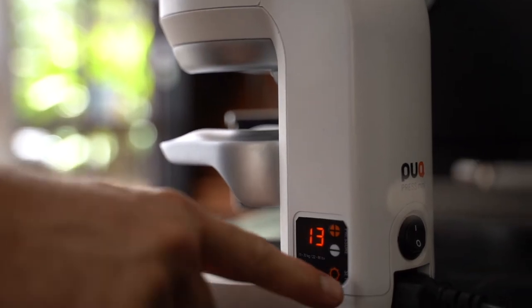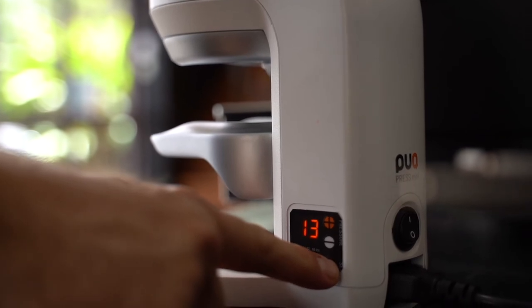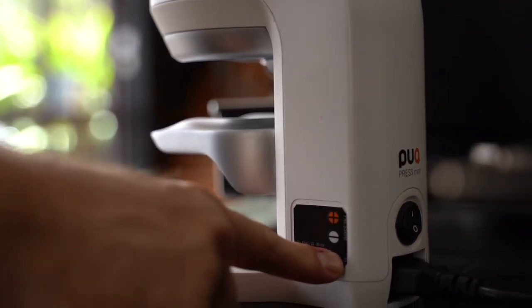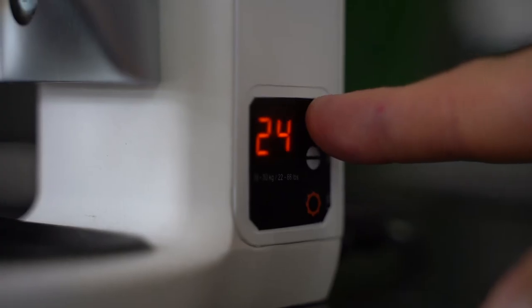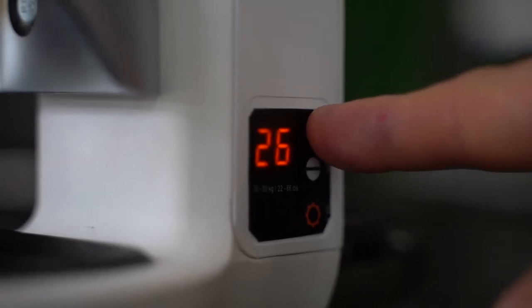The Puckpress features a simple LCD display, making quick pressure adjustments between 10 to 30 kilograms or 22 to 66 pounds at 1 kilo increments.